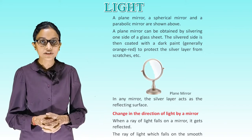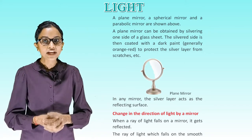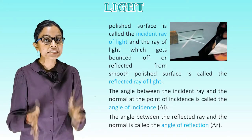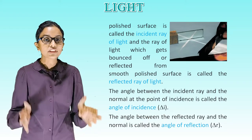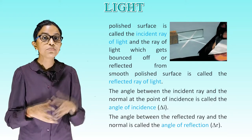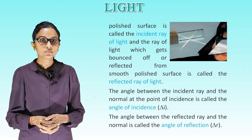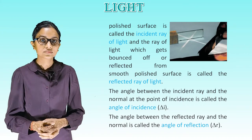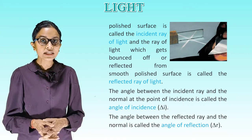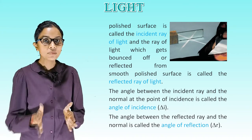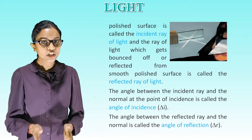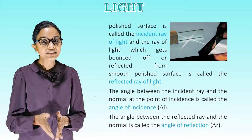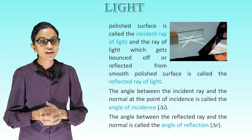Change in direction of light by a mirror: the ray of light which falls on the smooth polished surface is called the incident ray of light. The ray of light which gets bounced off or reflected from the smooth polished surface is called the reflected ray of light. The angle between the incident ray and the normal at the point of incidence is called the angle of incidence. The angle between the reflected ray and the normal is called the angle of reflection.